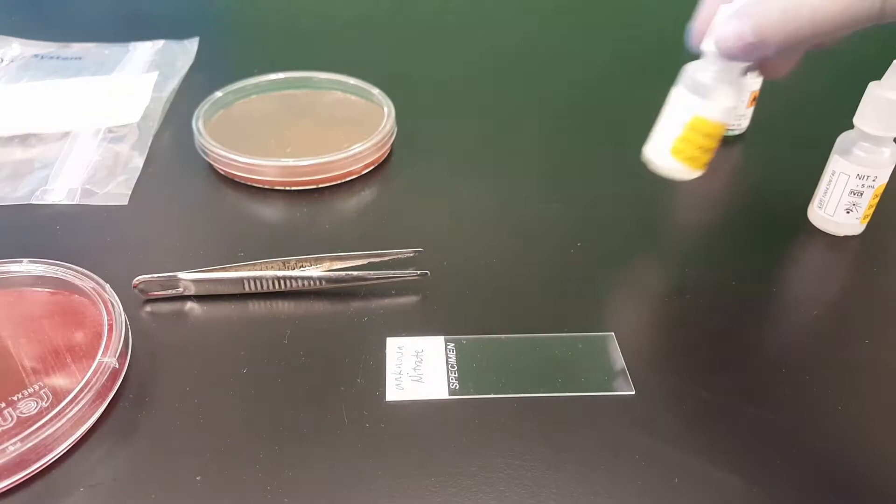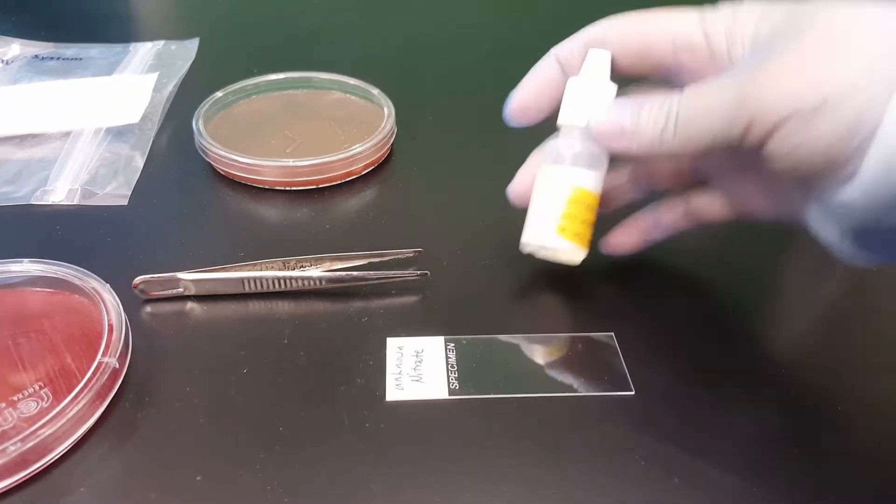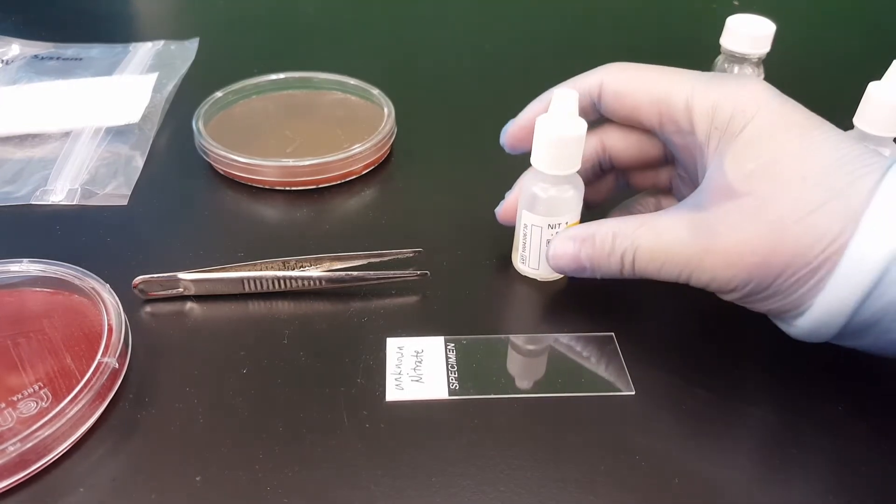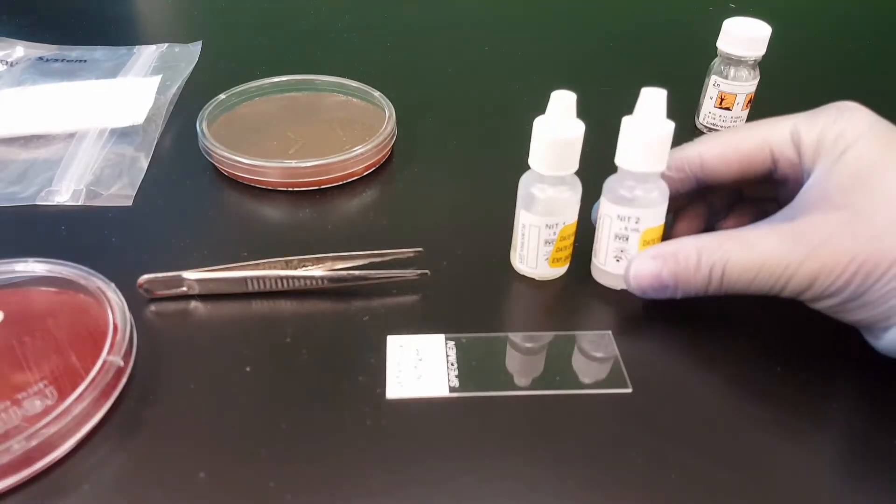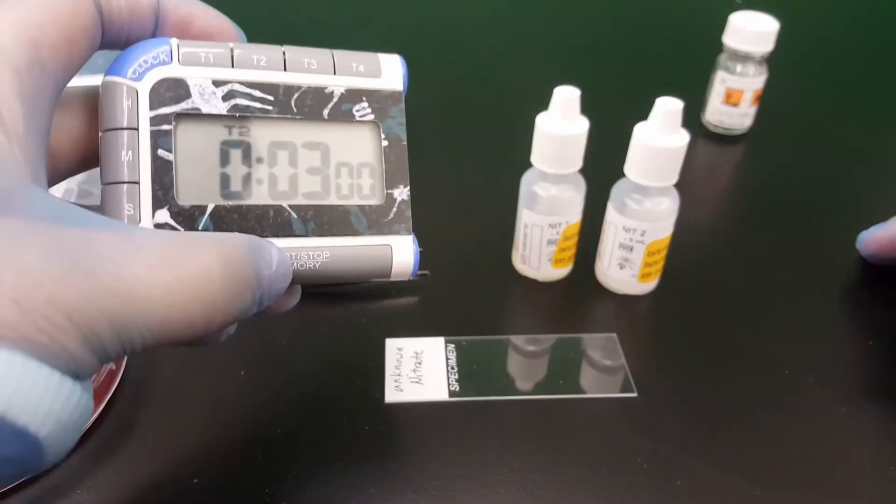We'll take it off of the heavy area, put it onto the actual slide here. We will be adding one drop of the nitrate one solution and then the second solution here and look for a color change within three to five minutes.